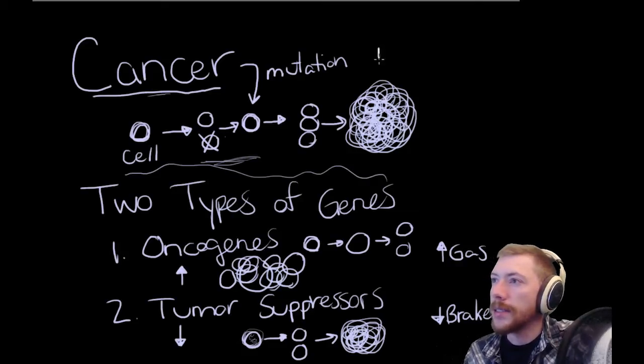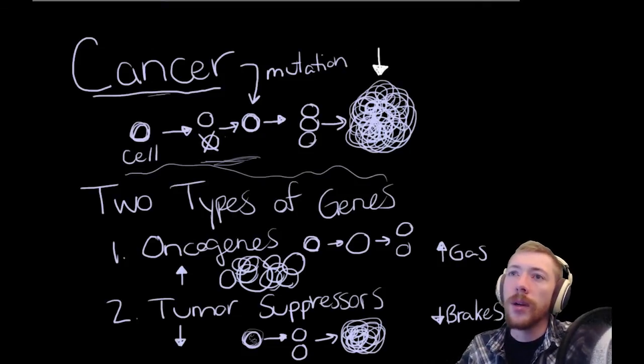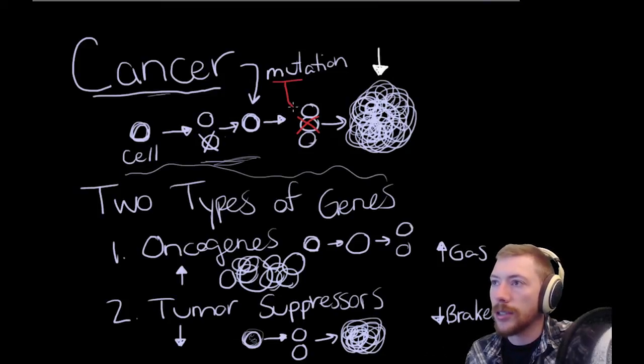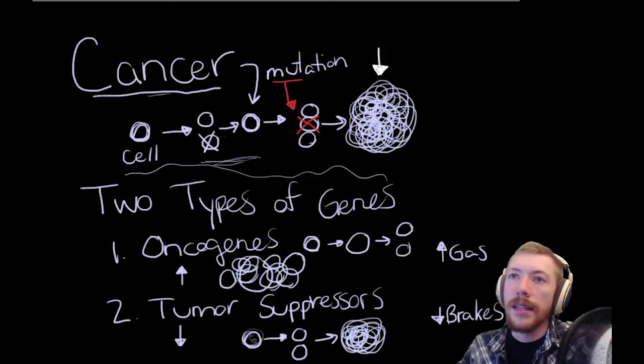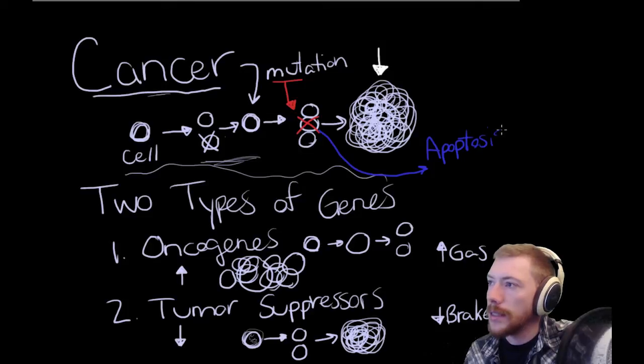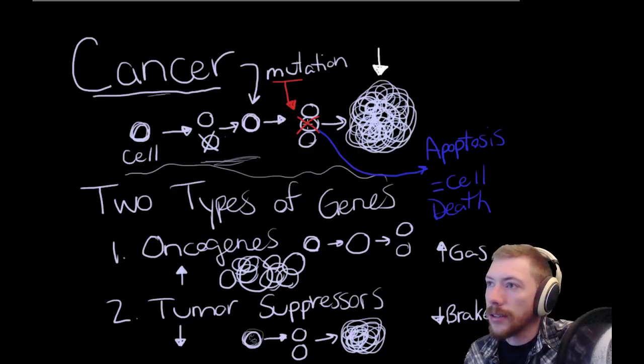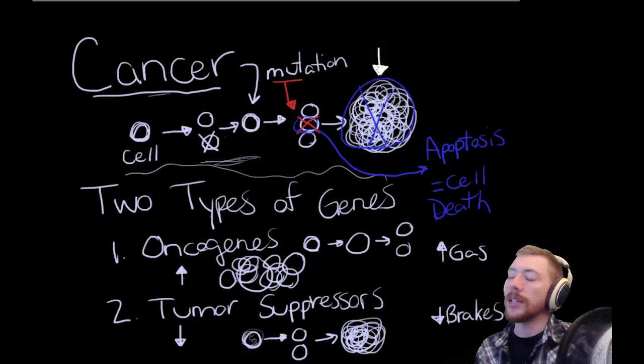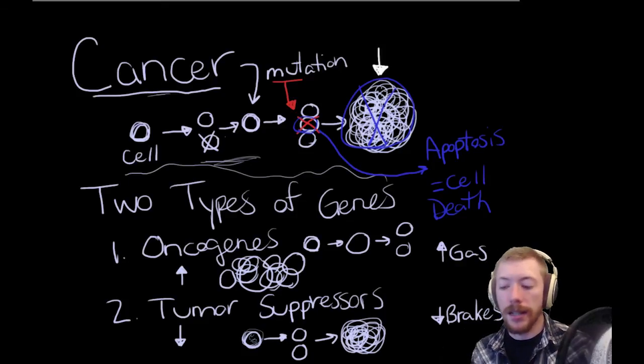So how does our body deal with this problem? How does our body deal with cancer? The simplest way that our body can deal with this problem is to first identify a cell that has undergone a problematic mutation. And once it does, it essentially sends that cell to its death. And we call this apoptosis. This is cell death. If we don't have this problematic cell, then we don't get this bigger problem. So it's a very basic but powerful way to deal with cancer.